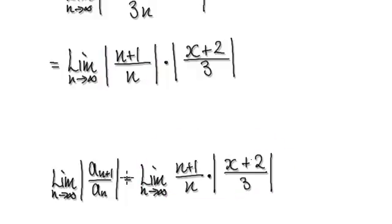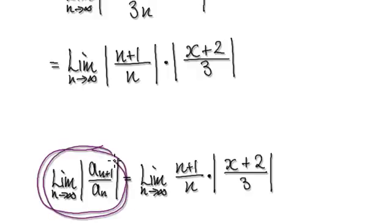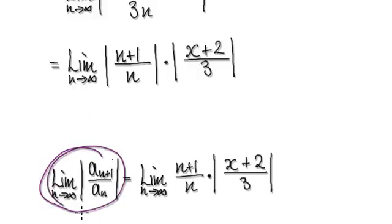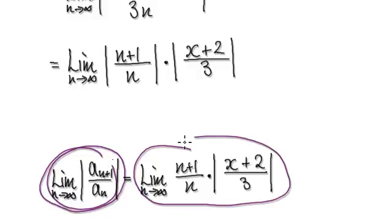With the ratio test, we always need to compute this value here. If this value is less than one, then we know it's going to converge. If it's greater than one, we know it's going to diverge. If it equals one, then it's inconclusive. We just computed this value and it equals this.